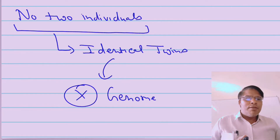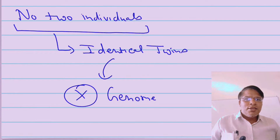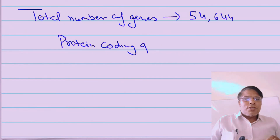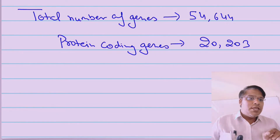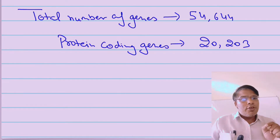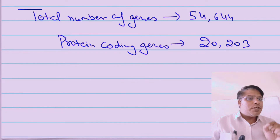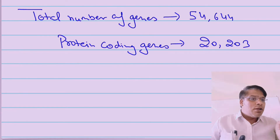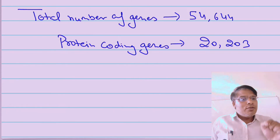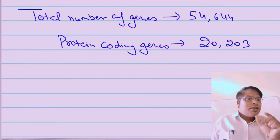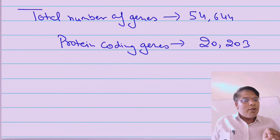We are going to learn many things about DNA fingerprinting in upcoming classes. The total number of genes present within the human being is 54,644. Hopefully you know very well what a gene is — a gene is actually a segment of DNA which codes for a biological product.